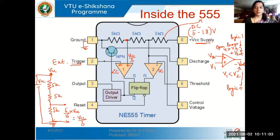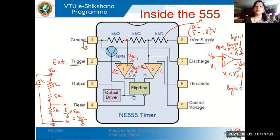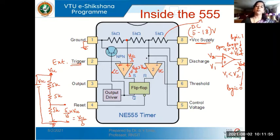To the inverting terminal we connect an external trigger input. Whenever the external trigger value becomes less than one-third VCC, the output of this lower comparator will be high, because the non-inverting terminal voltage is higher. If the inverting terminal voltage is higher than one-third VCC, the output will be at logic zero.